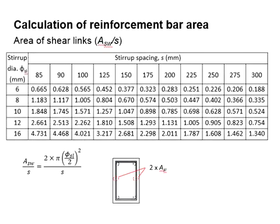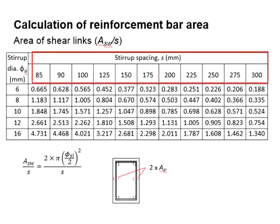Next, we look at the area of shear link table. The size of the stirrup is given here while the spacing of the stirrup is given here.